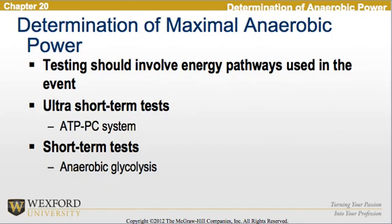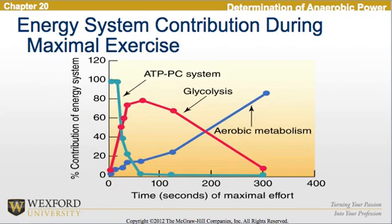Looking at the determination of maximal anaerobic power, testing should involve the energy pathways used in the event. Ultra-short-term tests involve the ATP-creatine phosphate system, while short-term tests involve anaerobic glycolysis. Below is a graph of the energy system contribution during maximal exercise, showing that both the ATP-creatine phosphate system, glycolysis, and aerobic metabolism change over time.